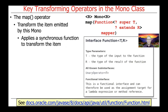MAP applies a synchronous function to transform the emitted item. This is interesting because Project Reactor was built after Java 8 had come out, so it uses all the Java 8 functional interfaces — things like Function and Supplier and so on. The function passed to MAP is a functional interface that's part of regular Java 8, and Project Reactor uses that as the type passed to MAP.